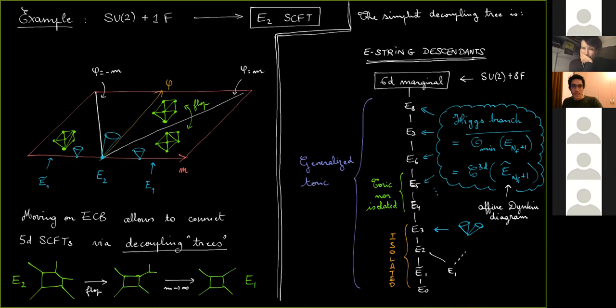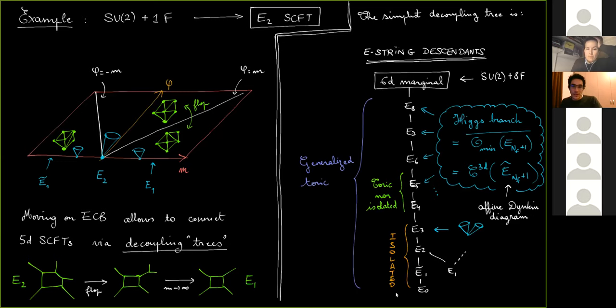Starting from this 6D marginal theory, applying the process of decoupling matter, you get a whole tree of descendants. In the case of descendants of the E-string, this can really be seen as moving on the extended Coulomb branch. In this case, the labeling corresponds to the flavor symmetry. The Higgs branch can be identified with the closure of the minimal nilpotent orbit of the corresponding algebra: E8, E7, E6, etc.